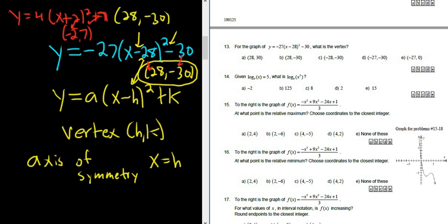If you had to find the axis of symmetry in this example here, it would just be x equals 28. It's always x equals, and then it's always your x coordinate. In this fake example here, the axis of symmetry would be x equals negative 2.